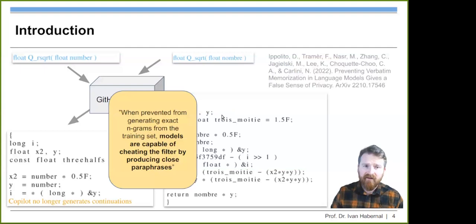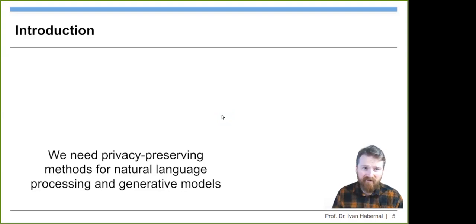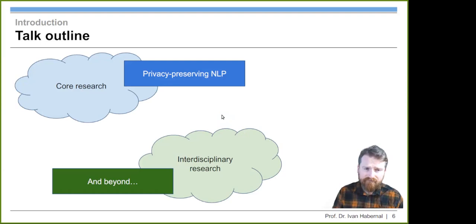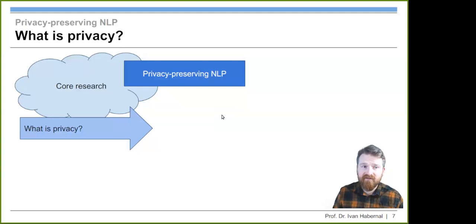So it's not only about privacy, but also spitting out training data. I guess these few examples made it clear that we need privacy preserving methods for NLP and generative models in particular. I'm going to structure this talk into two phases. One would be core research about privacy preserving natural language processing, and I will highlight a few examples from interdisciplinary research and beyond. Let me start with the core research question. What is actually privacy? What do we mean by that?